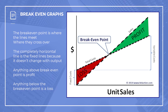Next, we need to take a look at breakeven graphs. These are quite common to be seen in an exam and we need to be able to interpret exactly what they're showing. First of all, we can see the breakeven point — that is where our lines cross over. Our two lines on a gradient will cross over at some point.